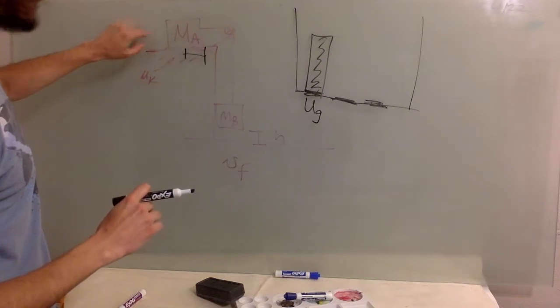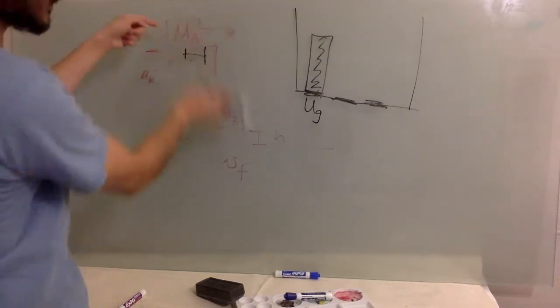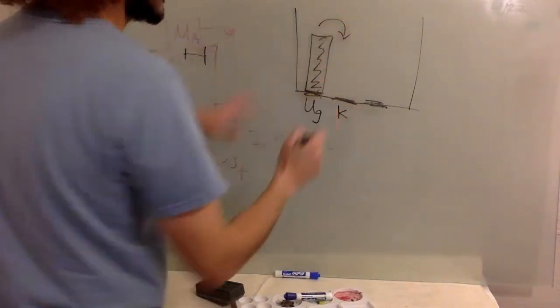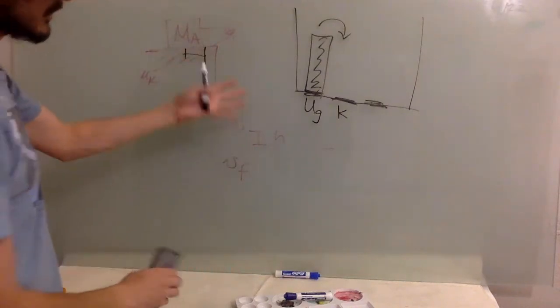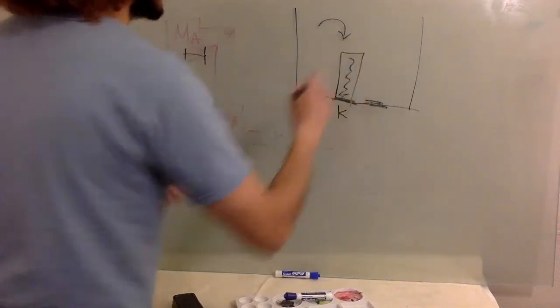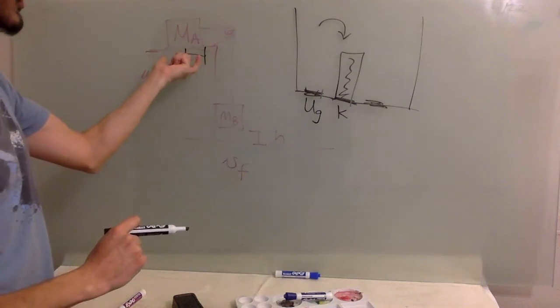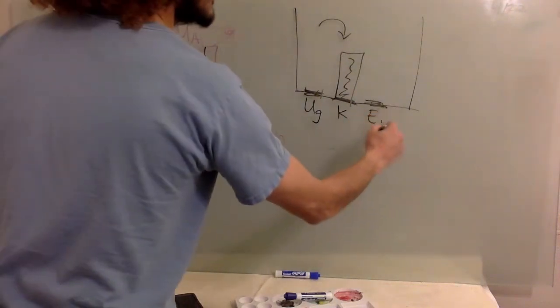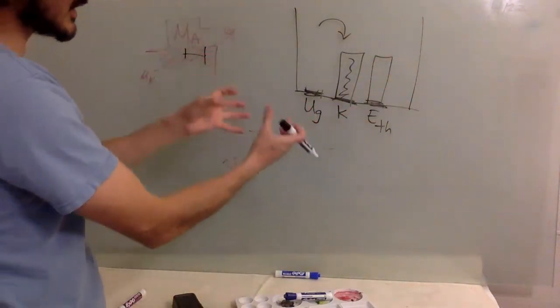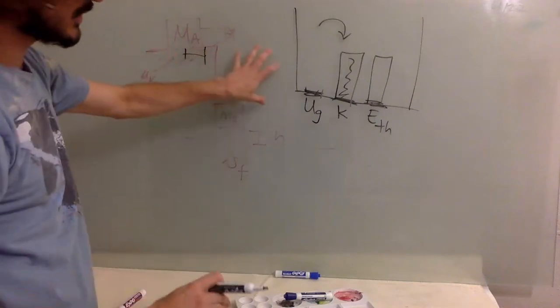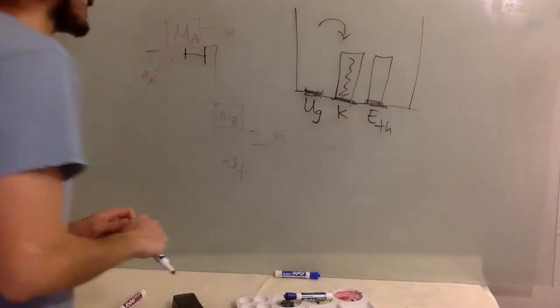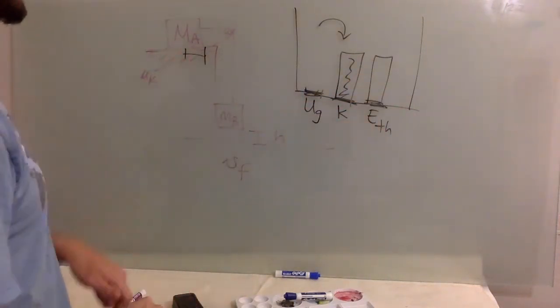But then this whole system starts moving. They both gain some kinetic energy. So this mu g, you know, at the very bottom is going to be zero. This mu g becomes kinetic. But then also, we're doing work here against friction. And friction produces, it becomes thermal energy, which is disorganized kinetic energy of the particles that we feel as heat. So this mu g becomes kinetic and thermal.